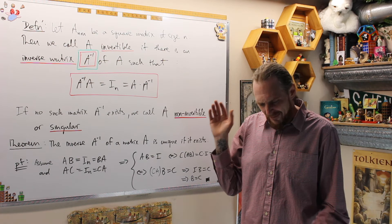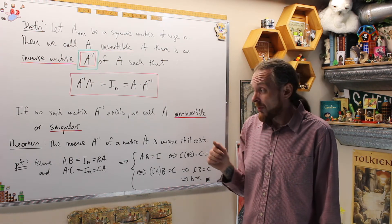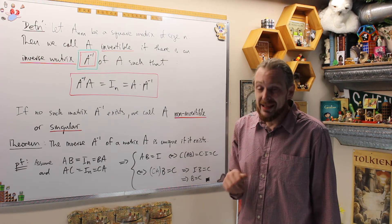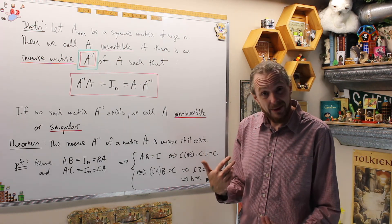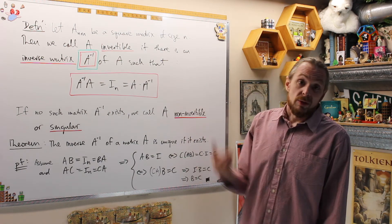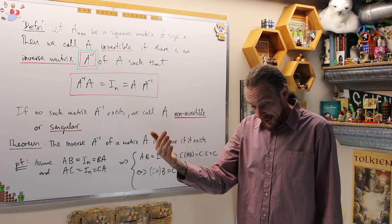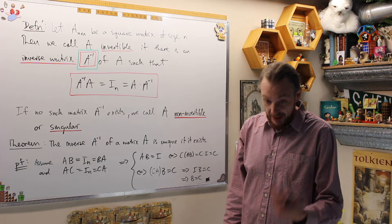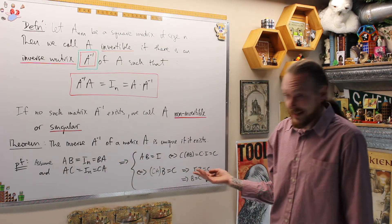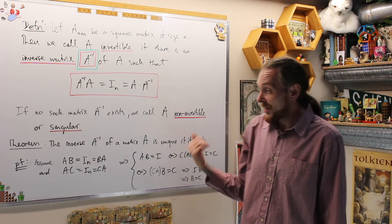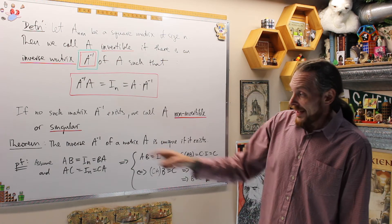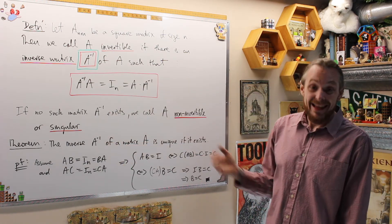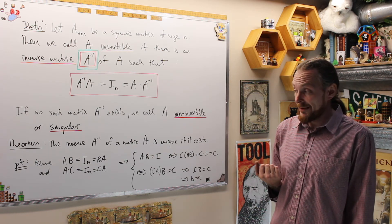In the next couple videos, we'll give conditions for when an inverse actually exists and give more than one method for finding inverses. But for now, you should be asking yourself: when can I determine whether an inverse exists, and how do I find it if we claim it does exist? Towards that end, the first part of that story is a theorem: if A inverse exists, then it is unique.